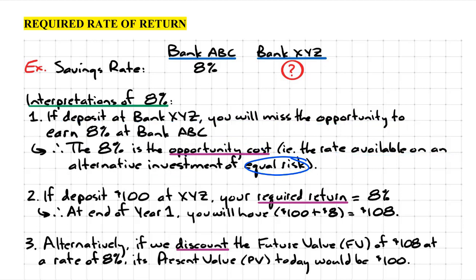Here's the logic: notice that we're comparing two banks with each other because that's a fair comparison. We're not comparing the 8% at Bank ABC with some return we could earn on a high-risk speculative investment, because that would not be a fair comparison.